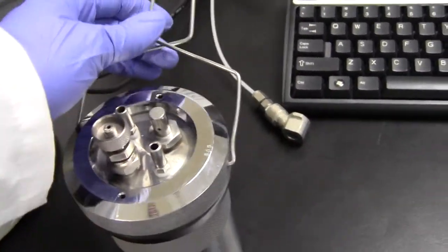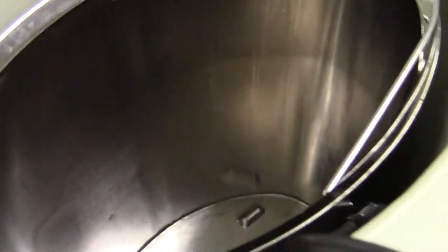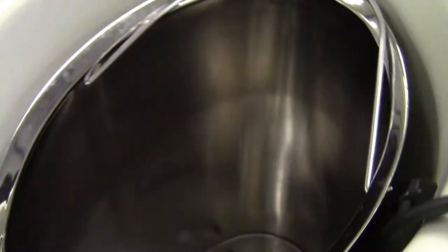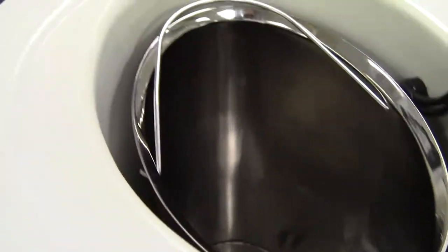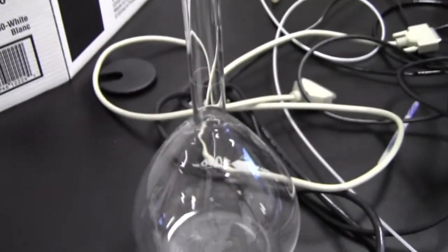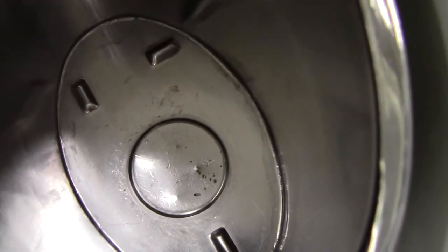The bomb is going to sit inside this bucket, and this bucket should already be filled with exactly two liters of distilled water using your volumetric flask that's provided. If we look inside here, you see the three little bumps at the bottom.